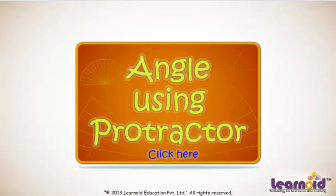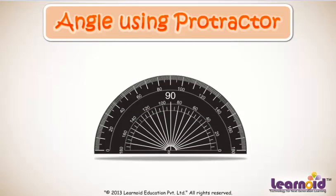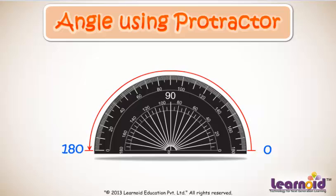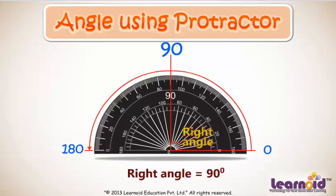Today we will learn identifying angles. A protractor has angles marked on it from 0 degrees to 180 degrees. In between 0 and 180 degrees, 90 degrees is also marked. 90 degrees represents a right angle.